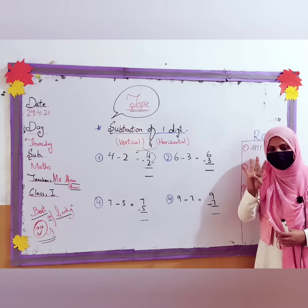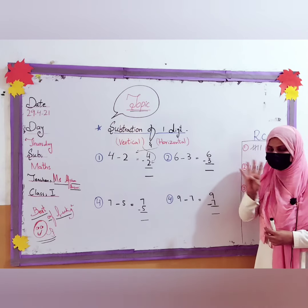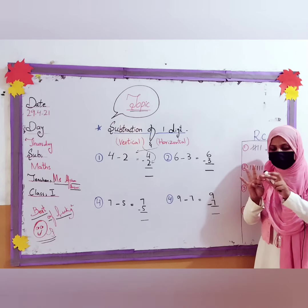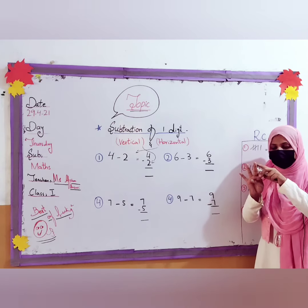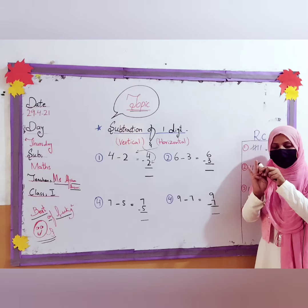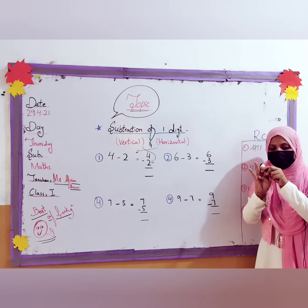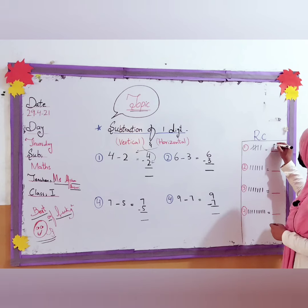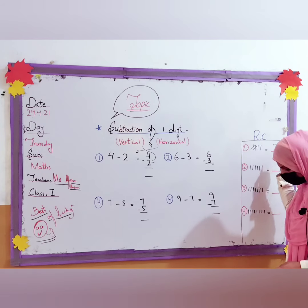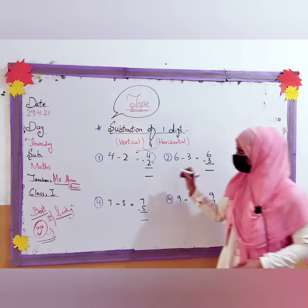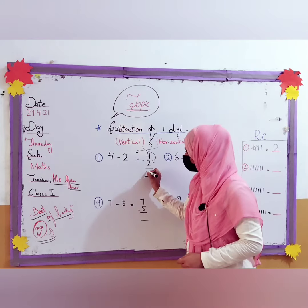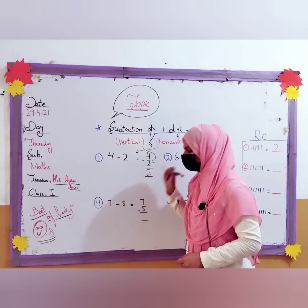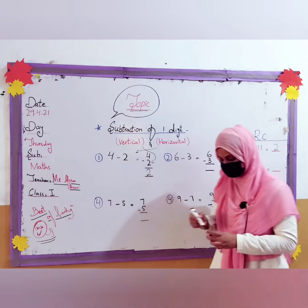So we can also do counting on fingers. 4 fingers are here, so you have to minus 2 fingers — 1 and then 2. Then how many will remain? 1 and 2 — just 2 remain. So you have to write 2 in the rough column as well as in front of the question.